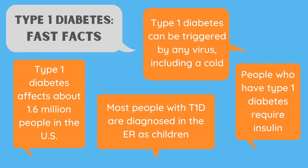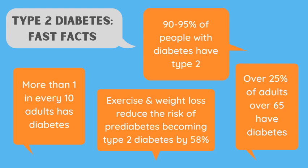Fast facts about type 1 diabetes: it can be triggered by any virus including a common cold, affects about 1.6 million people in the U.S., and most sufferers are children and young adolescents who require insulin as treatment. For type 2 diabetes, more than 1 in 10 adults have it, accounting for 90–95% of diabetics, with over 25% of adults over 65 years having type 2.